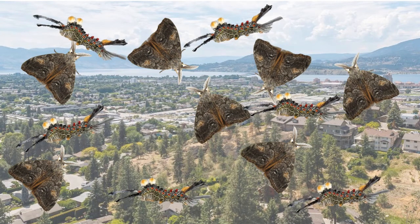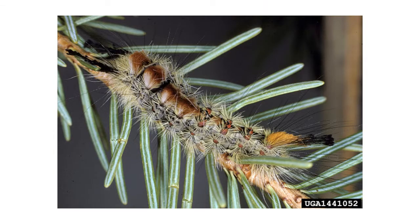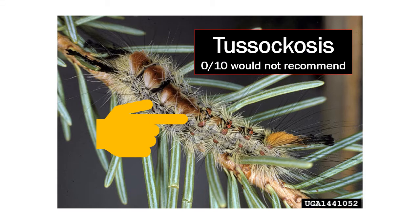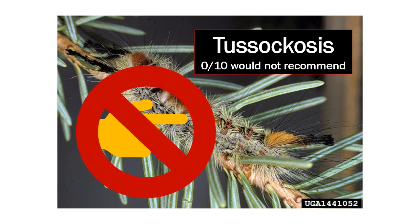Aside from degrading the aesthetic quality of the landscape, humans can be bothered by Douglas fir tussock moths in another way. The hairs on the caterpillars, egg masses, cocoons, and adult females can cause an allergic reaction in humans. This reaction is called tussockosis.